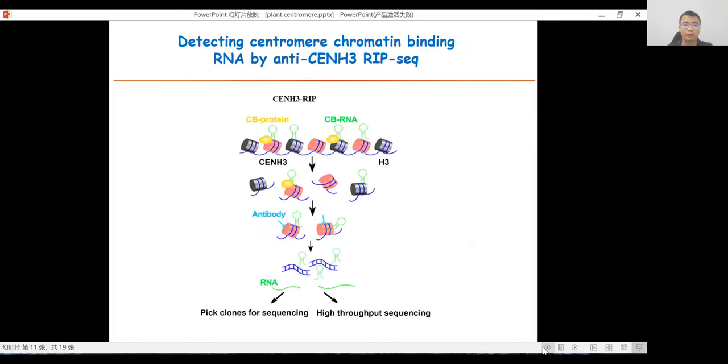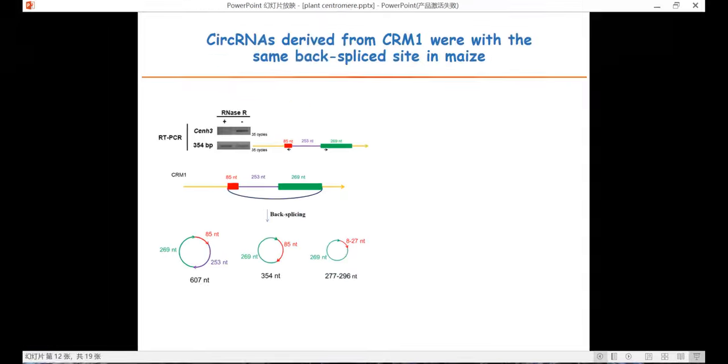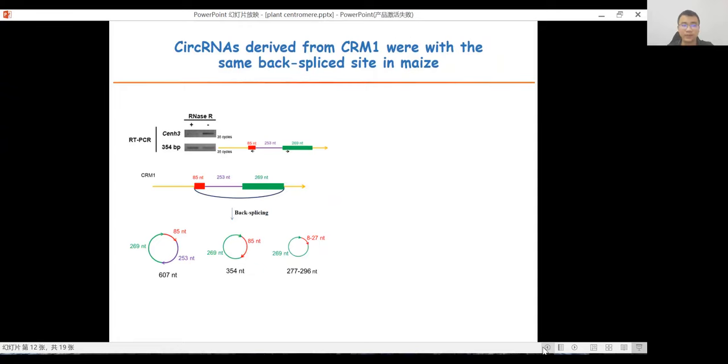We performed antisense RIP to capture centromere-binding RNAs, and the RIPed RNAs were further used for cDNA library screening and high-throughput sequencing. Three types of back-spliced RNA from maize centromeric retrotransposon element CRM1 with different sizes but the same back-splice site were identified.